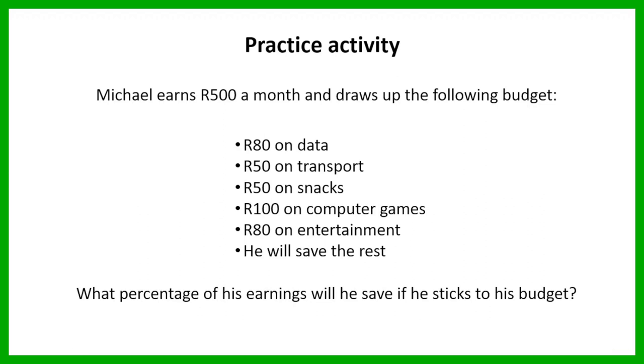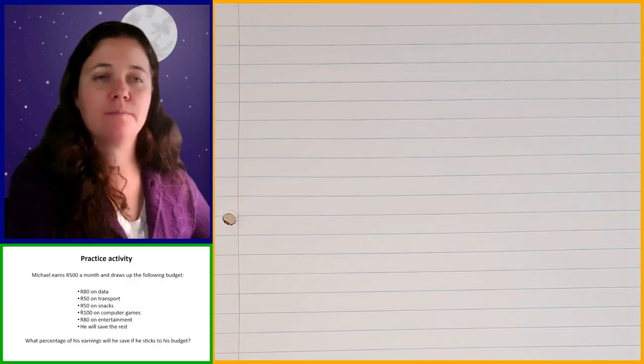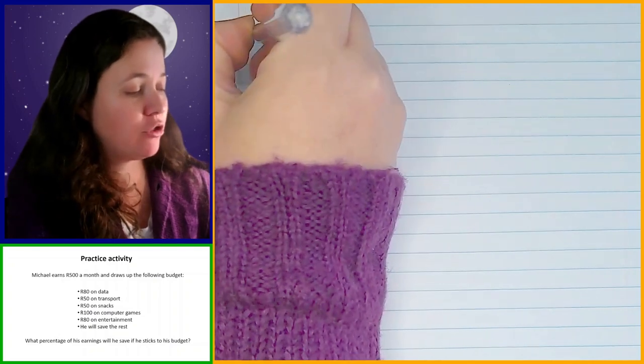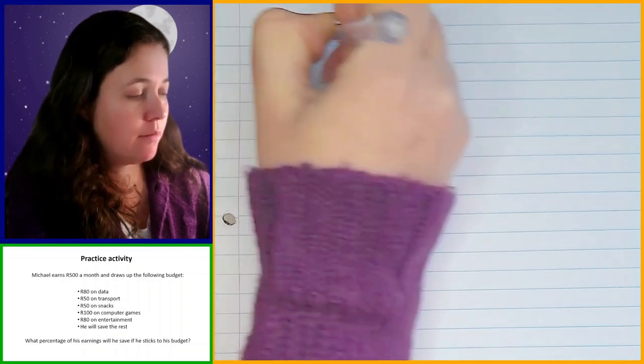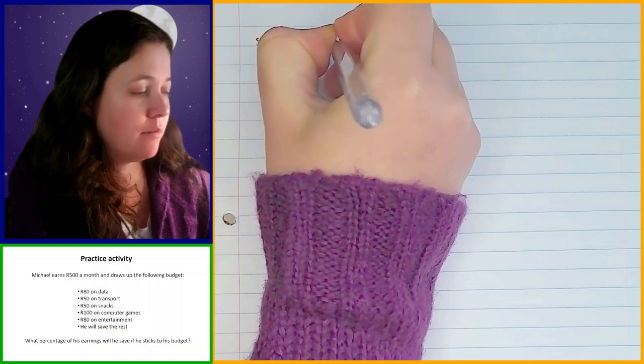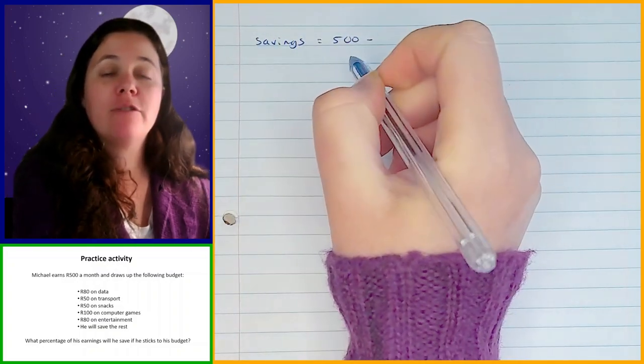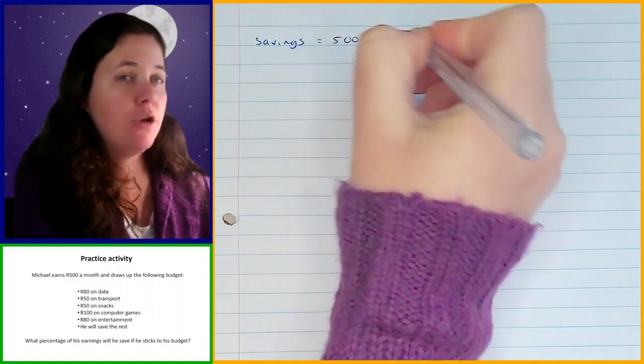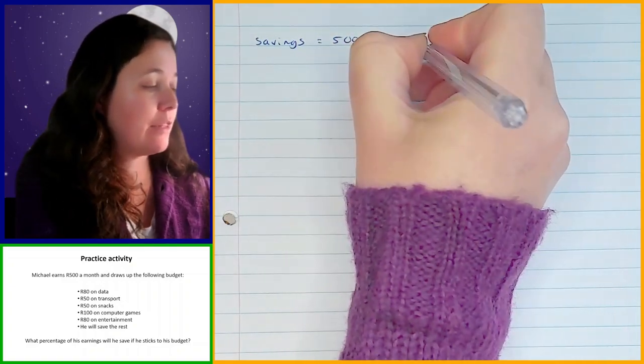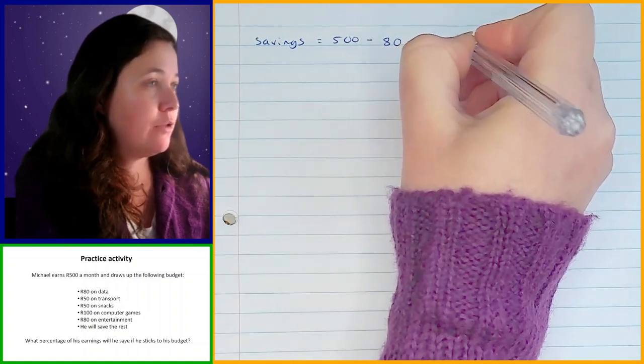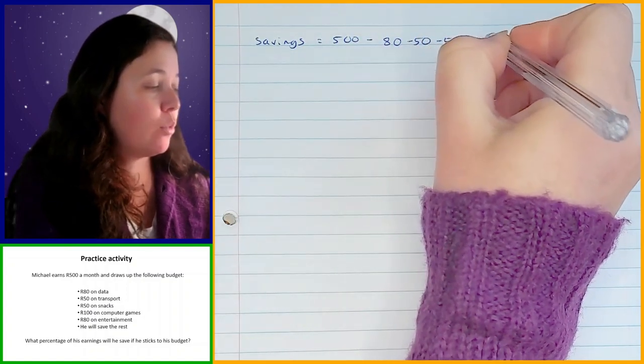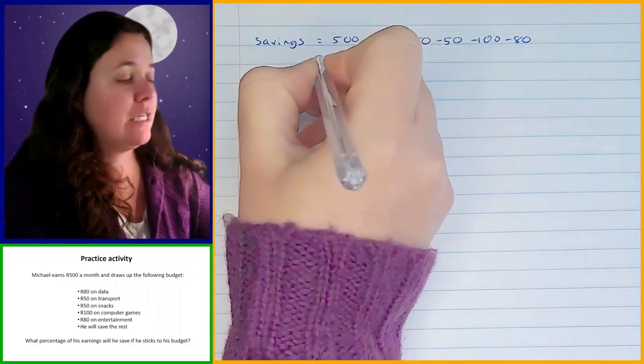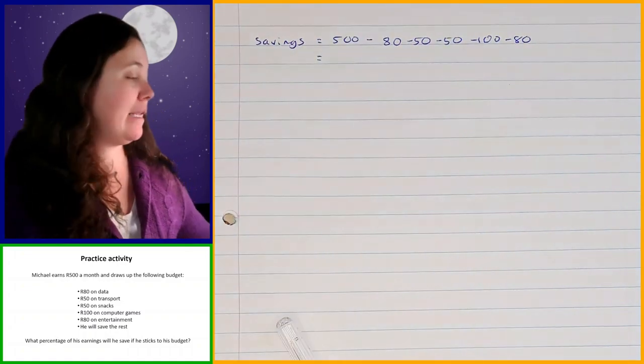Okay, you should be done with that by now, so let's go through that example. So, we start off by taking the amount of money that he earns, which is 500 rand, and subtracting from that the amount of money that he is budgeting for each of the different things in his budget. So, we're going to subtract the 80 rand for data, and the 50 rand for transport, and 50 rand for snacks, 100 rand for computer games, and 80 rand for entertainment. And then we'll find out how much is left over to know how much he's planning on saving.